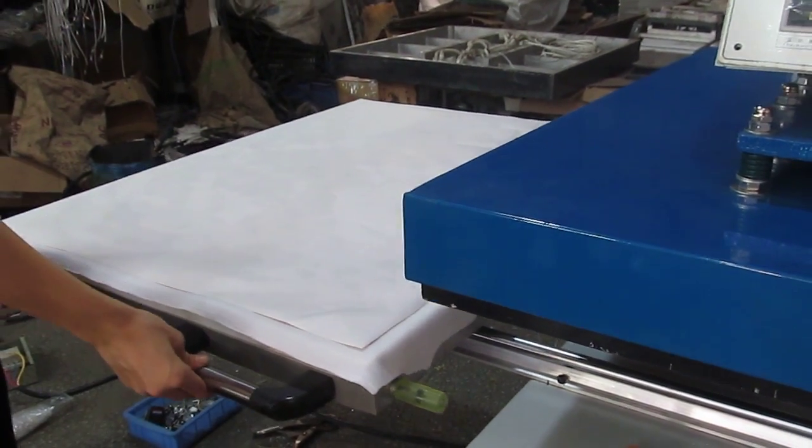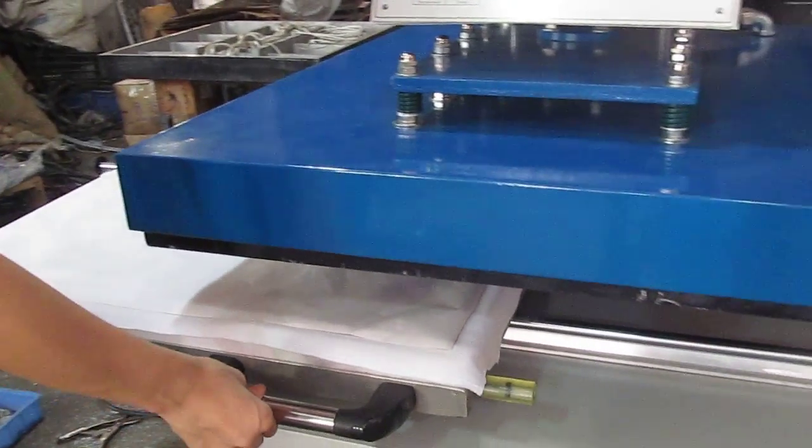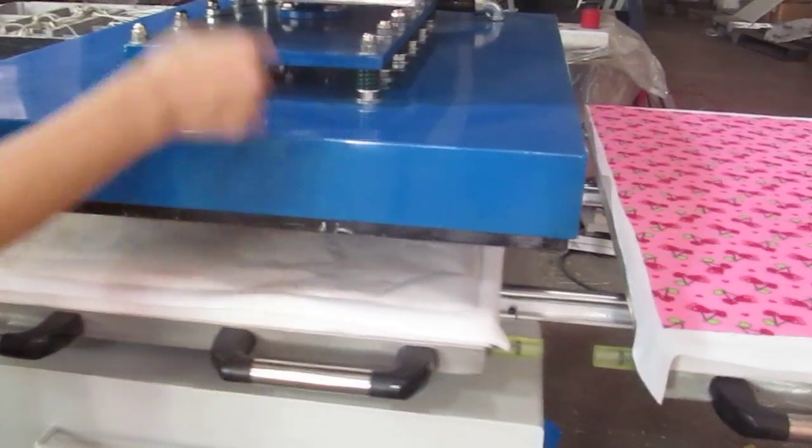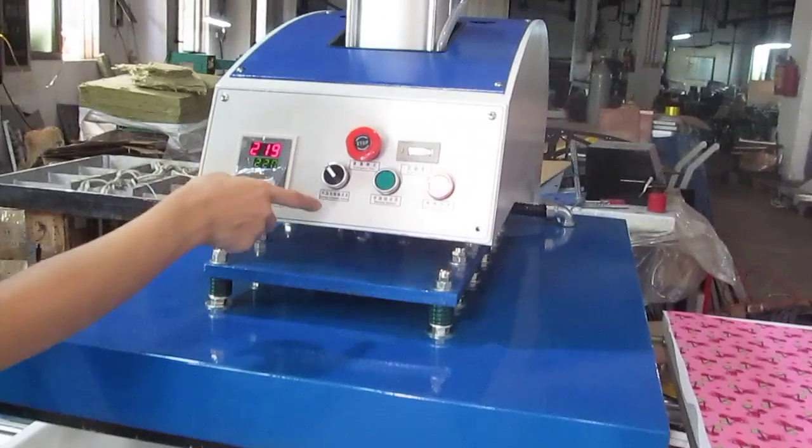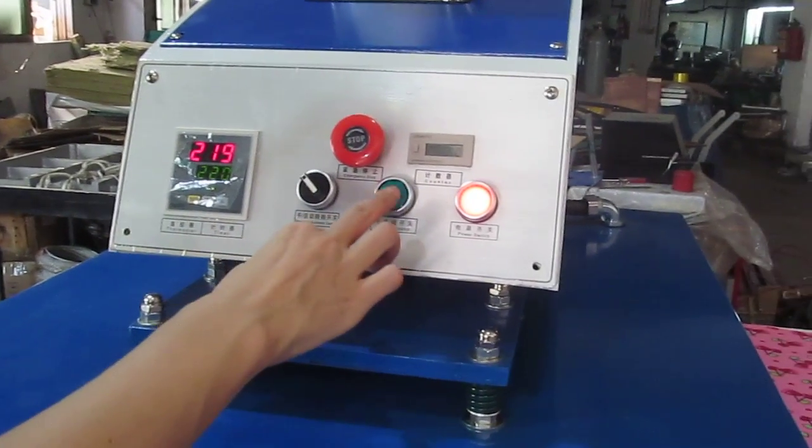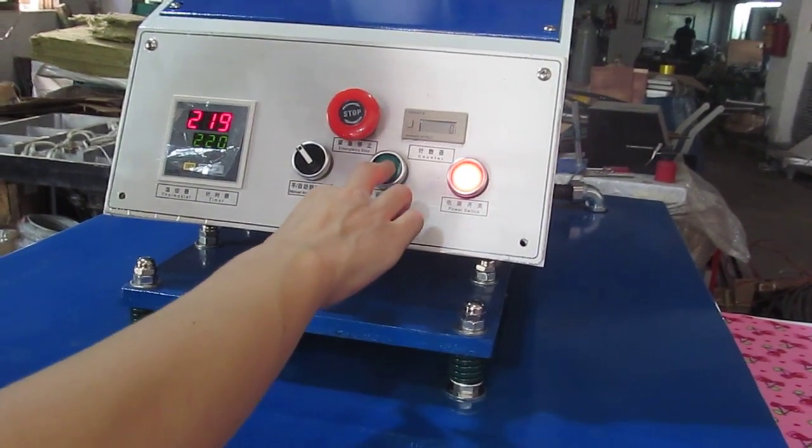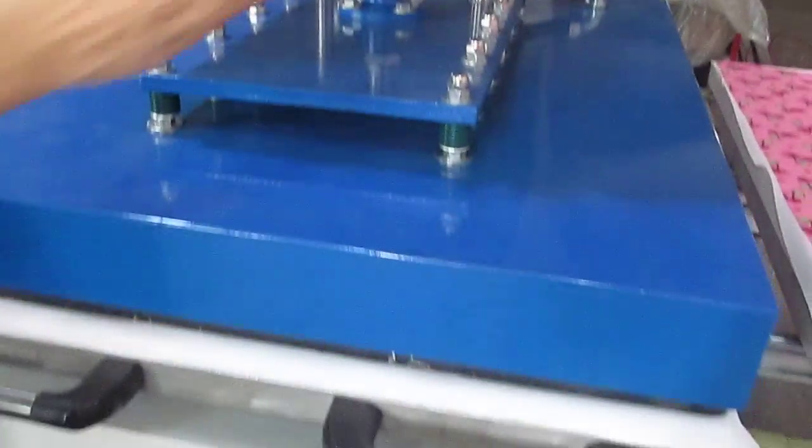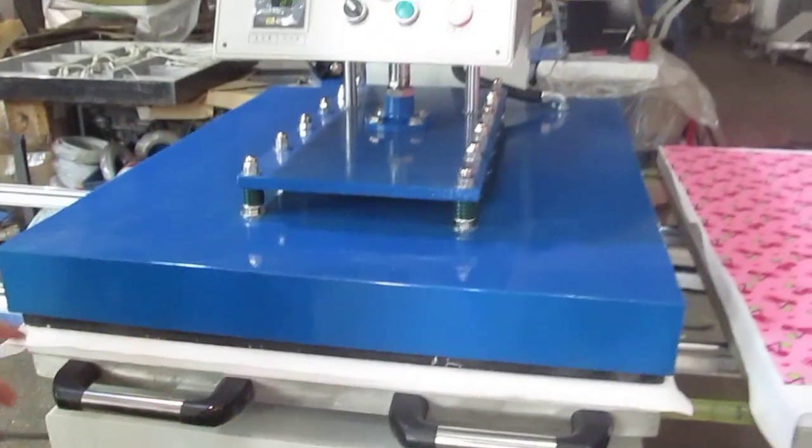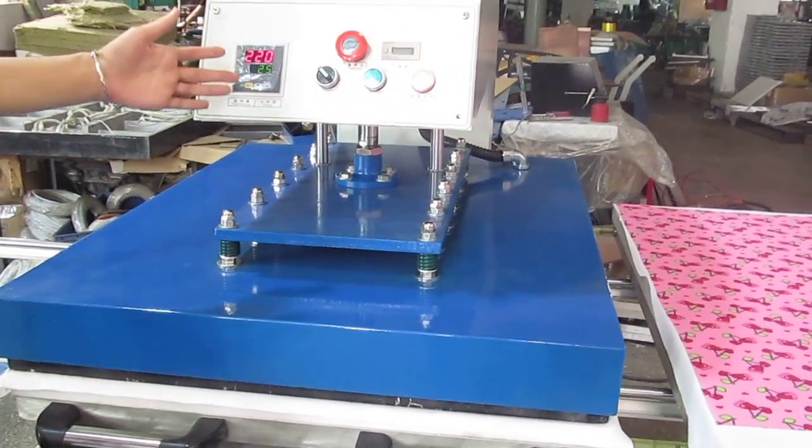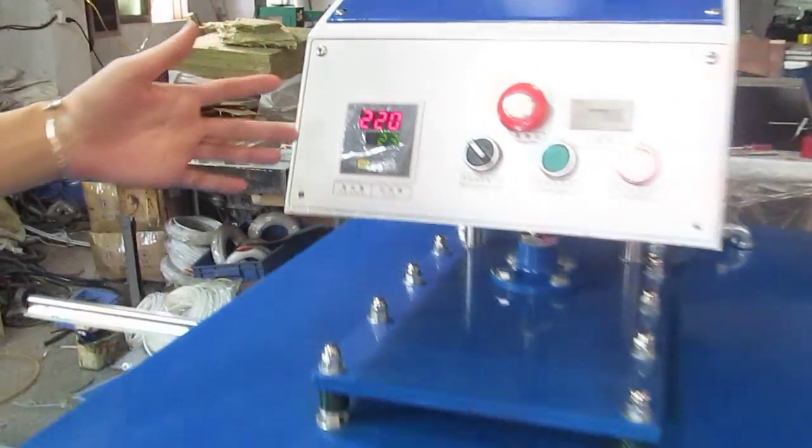Then we put this working plate into the right position. Now it's the manual mode. Now we have to practice the manual process. Press down the machine.